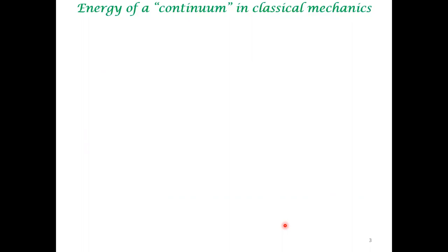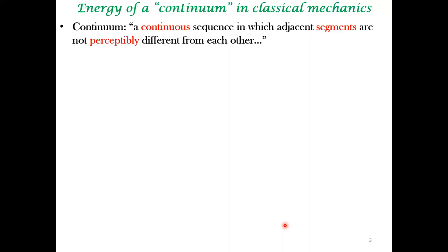We now want to take the next step. In classical macroscopic thermodynamics, we are always looking at a continuum — and this continuum is not just a macroscopic thermodynamic issue; it's also present in classical mechanics, fluid mechanics, and solid mechanics. A continuum is a continuous sequence in which adjacent segments are not perceptibly different from each other. There are no finer segments, no holes at any length scale.